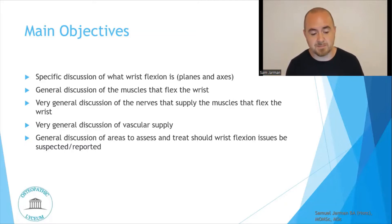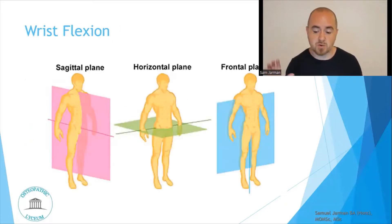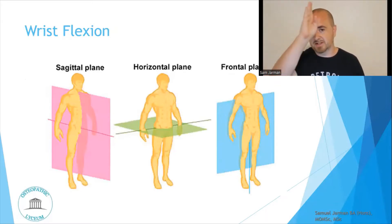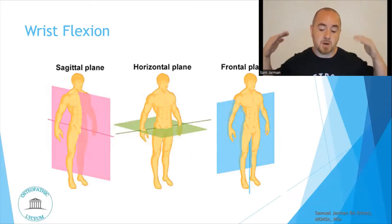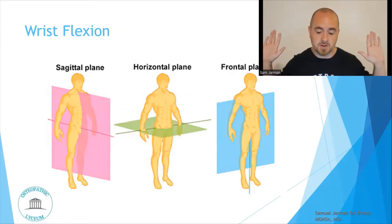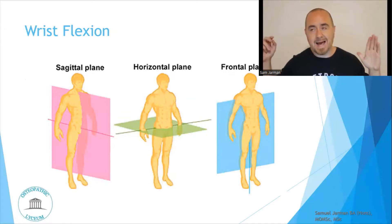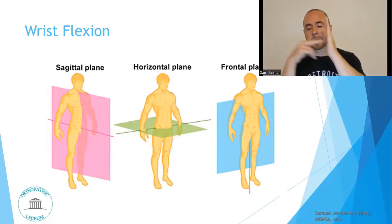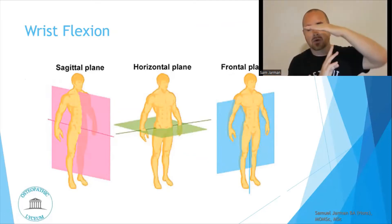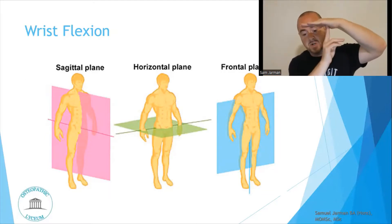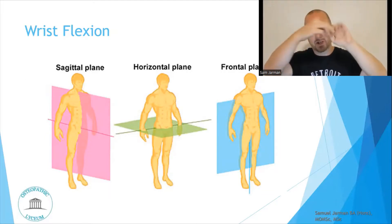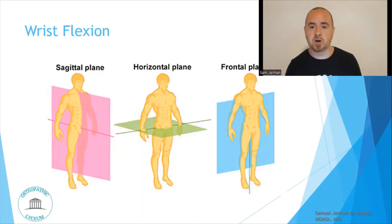A quick overview of planes and axes: the sagittal plane is a 50/50 cut of the body left to right; the horizontal transverse plane is a 50/50 cut top to bottom; the frontal or coronal plane is a 50/50 cut back to front. Axes are perpendicular to planes — sagittal plane has a horizontal or transverse axis; the transverse plane has a vertical axis; the frontal or coronal plane has an AP or PA axis.